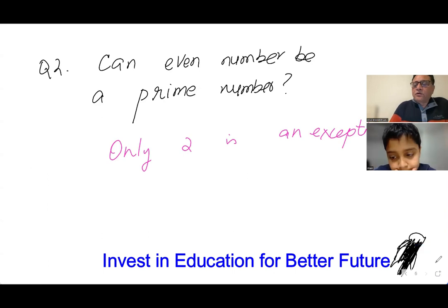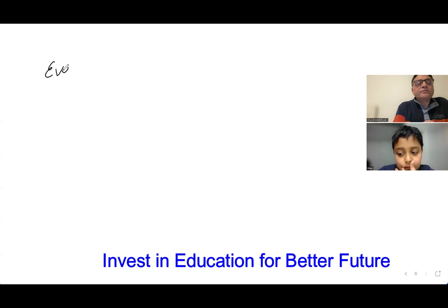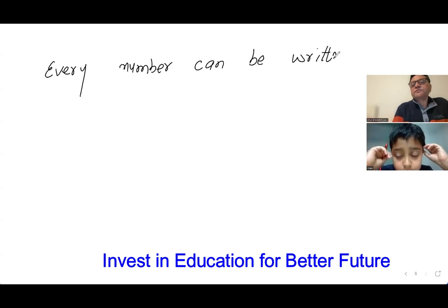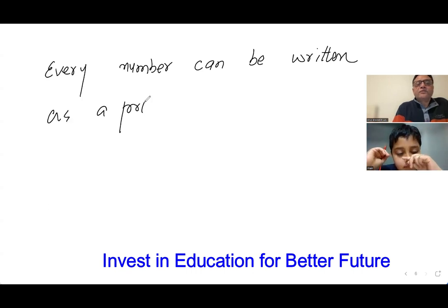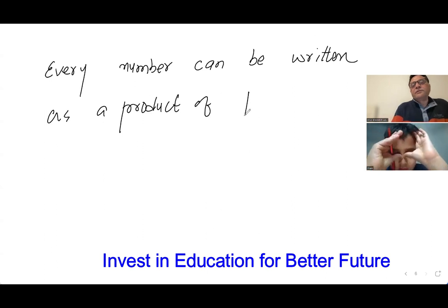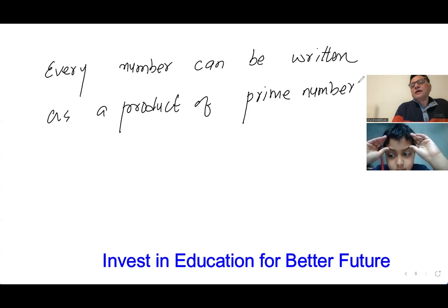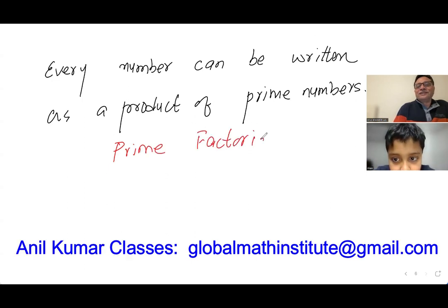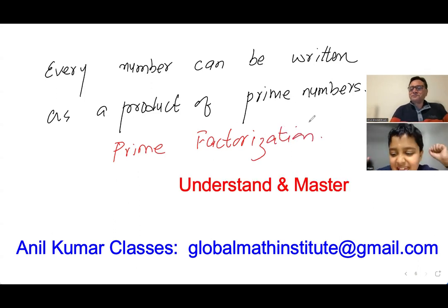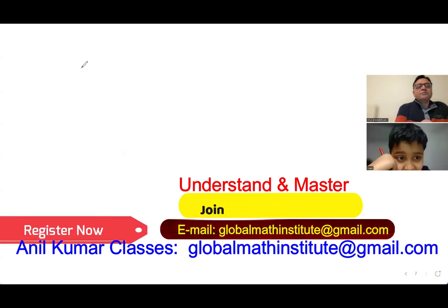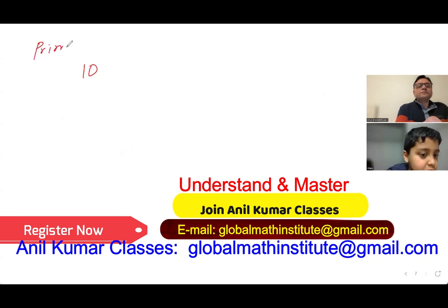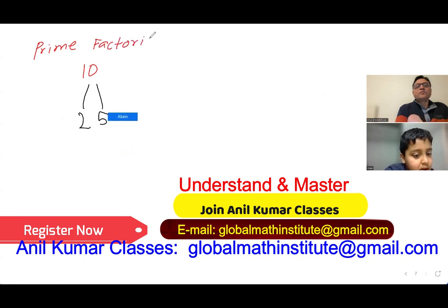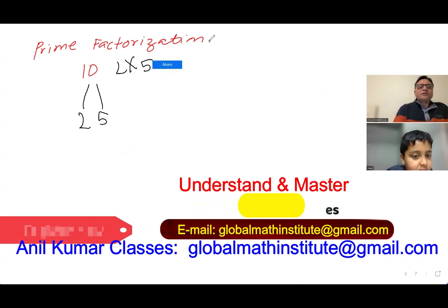So now you've learned it. Another important thing: every number can be written as a product of prime numbers. The process of finding those prime numbers is called prime factorization. Let's start with the number 10. Can you do the prime factorization of 10? First you can do 2 times 5, so 10 equals 2 times 5.